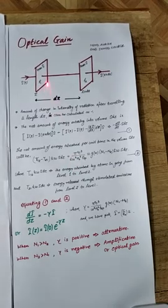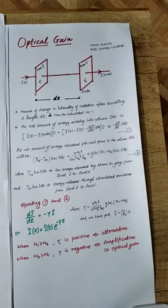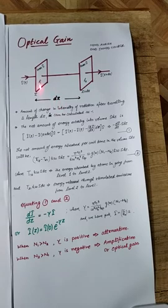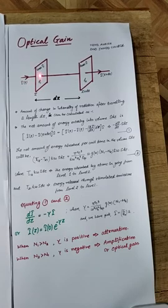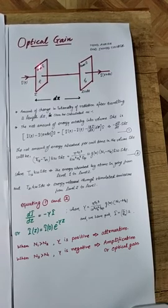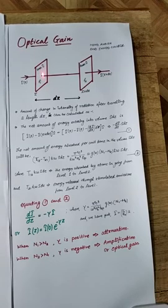Let us consider a collection of atoms confined between two planes P1 and P2, whose area is S each, and these planes are separated by a distance dz. The plane P1 is situated at z and the plane P2 is situated at z plus dz. The radiation of intensity I is being passed through this collection of atoms. The volume between these two planes will be S·dz, since S is the area of the plane and dz is the separation.